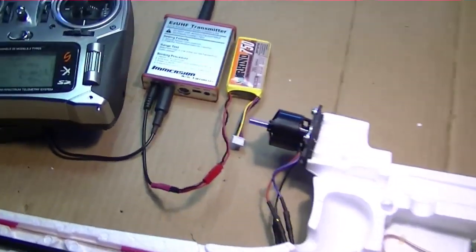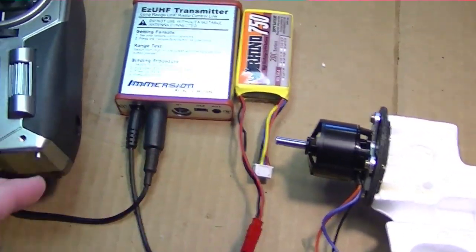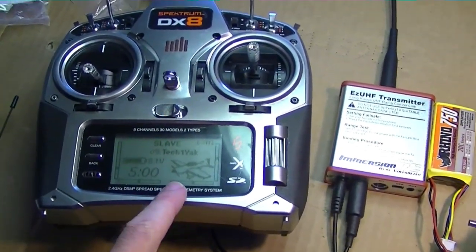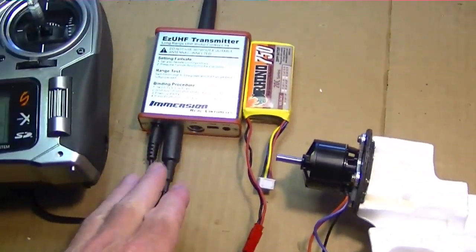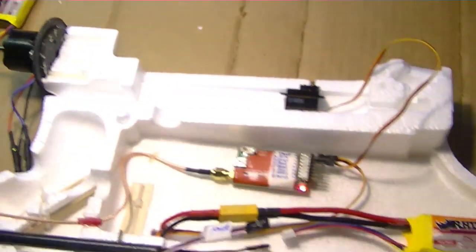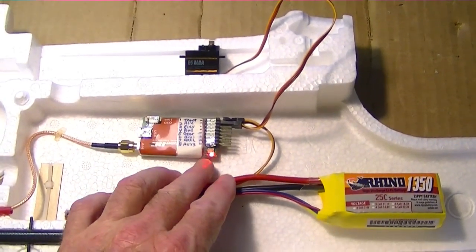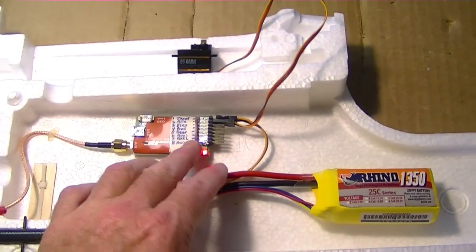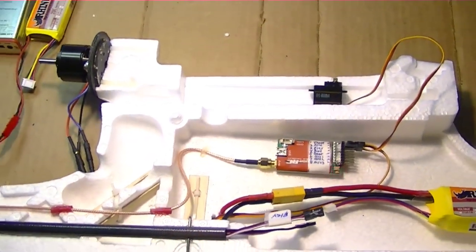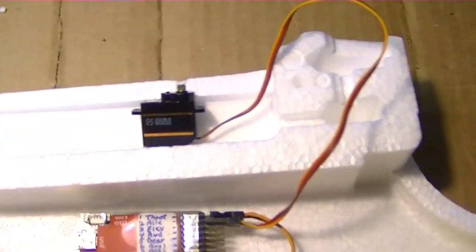Okay, just a quick test. I have the Easy UHF transmitter plugged into the radio at the trainer port here. This is my DX8 Spectrum DX8 radio, and it's turned on, powered off a battery here. And over here I have the Easy UHF receiver, and it's got the heartbeat light blinking because it's bound. And I've got one servo hooked up, and the motor of course is hooked to the ESC.